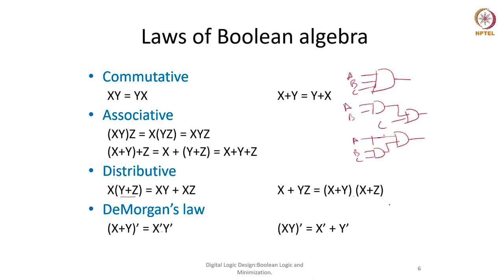The duality principle is heavily exploited in De Morgan's law. Whenever we want to invert a function f, what we need to do is invert all of its variables and replace AND with OR and replace OR with AND. We will take a couple of examples — if not today, then in the next lecture — to see how this duality principle can help us in minimization or in viewing things differently.